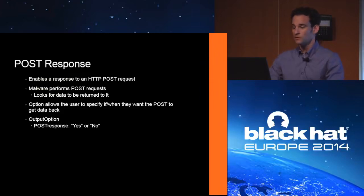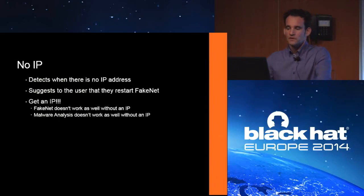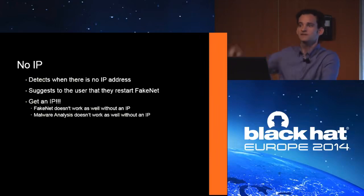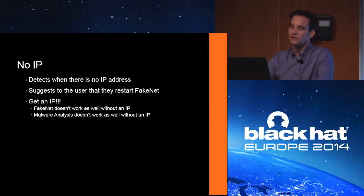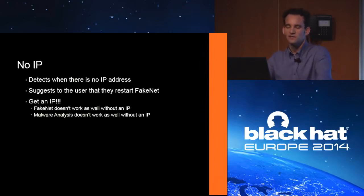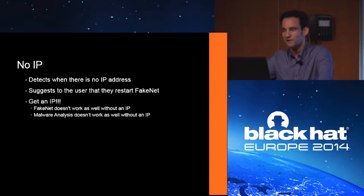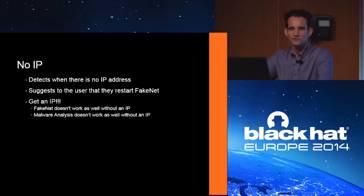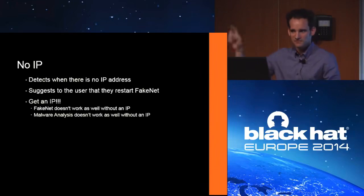The most common user error is that you don't have an IP address or a proper network interface set up on your system. For example, in VMware if you don't have the connected box checked, there's going to be no network interface. We detect if you have an IP address or not. I also recommend having an IP address regardless, because not just does FakeNet need network connectivity — malware needs it as well. So always make sure that connected box is checked on whatever virtualization software you use. VMware automatically has DHCP and can serve you an IP address — you just check the box and you're good to go.